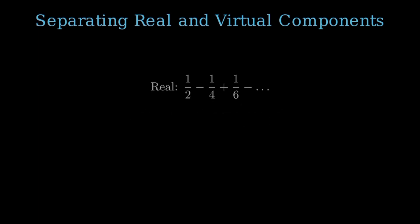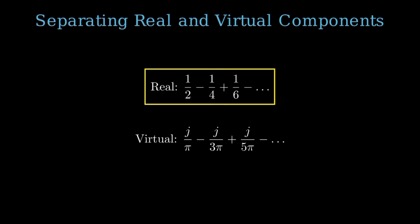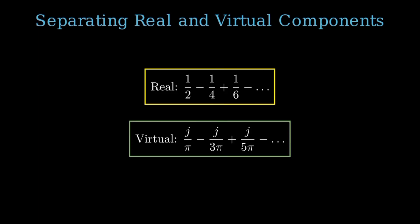This can be rewritten as the sum of one-half minus one-fourth plus one-sixth minus one-eighth and so on, plus j times the sum of one over pi minus one over 3pi plus one over 5pi minus one over 7pi and so on. This separation will allow us to compare it with another approach using the virtual log formula.